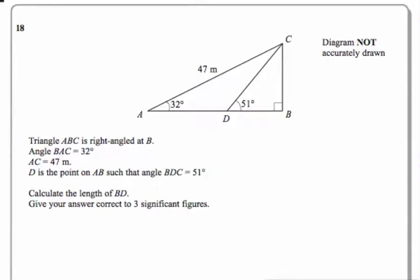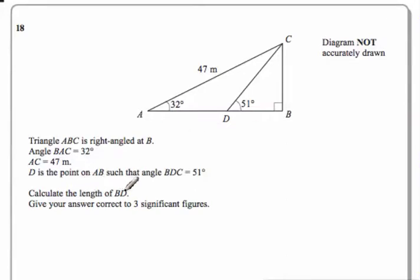Trigonometry — because we've got right-angle triangles and some angles, so it's definitely going to be trigonometry. They want me to calculate the length BD, which I'm going to colour in red and call X. That's what we're trying to find.